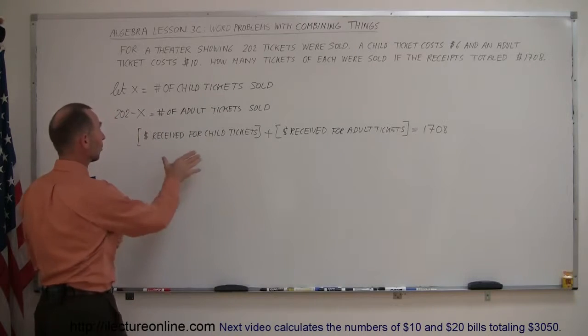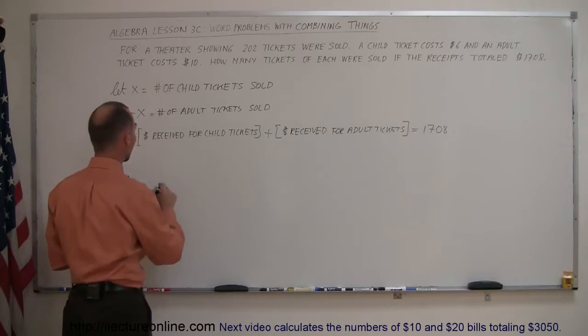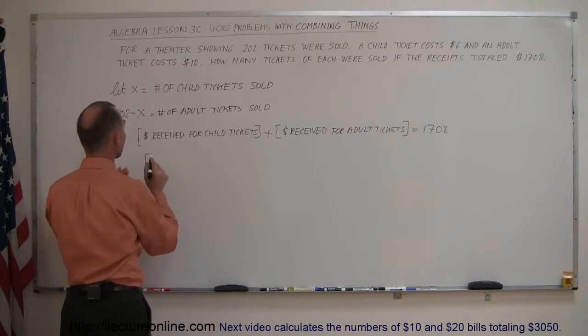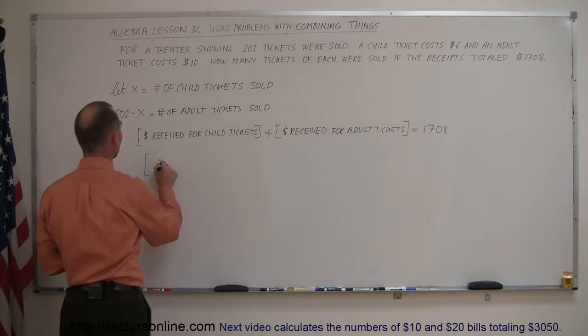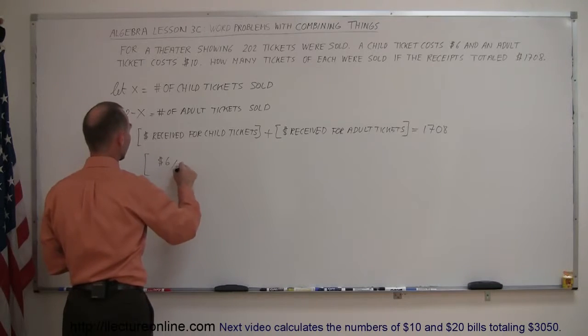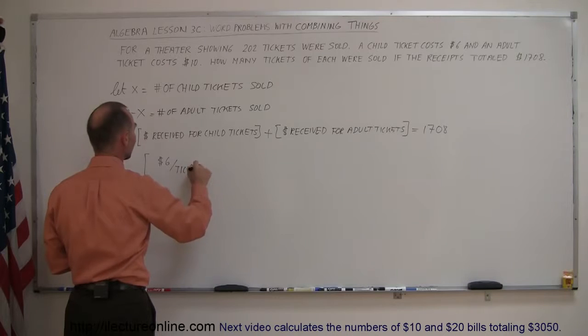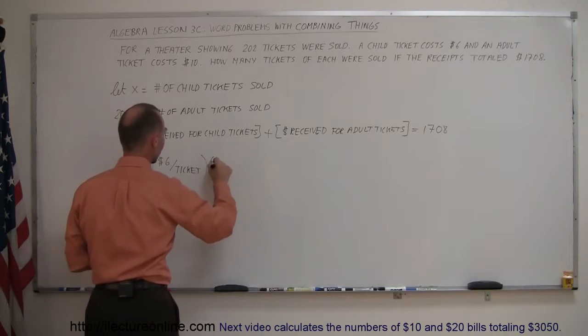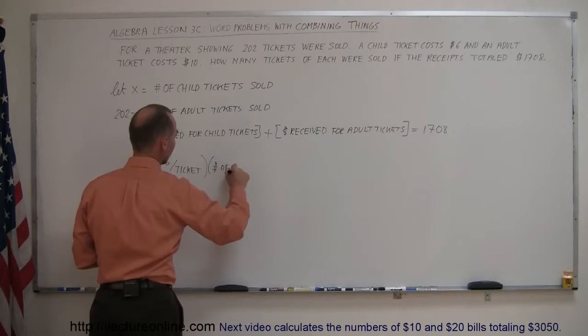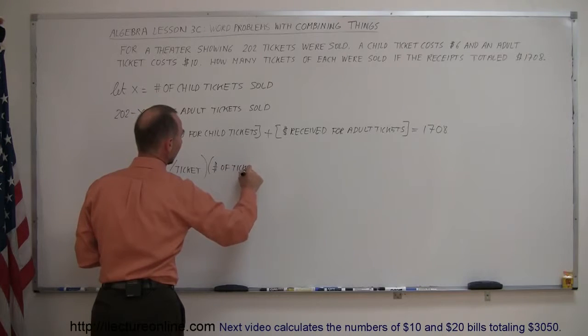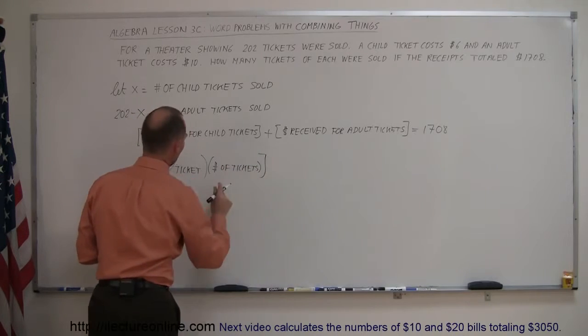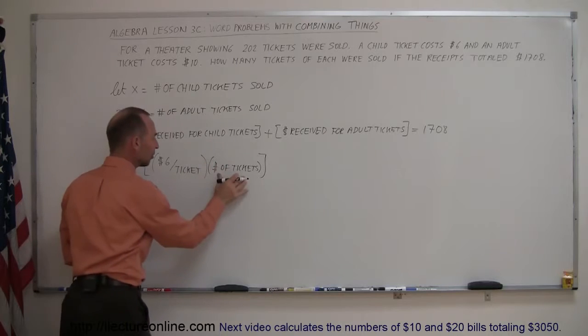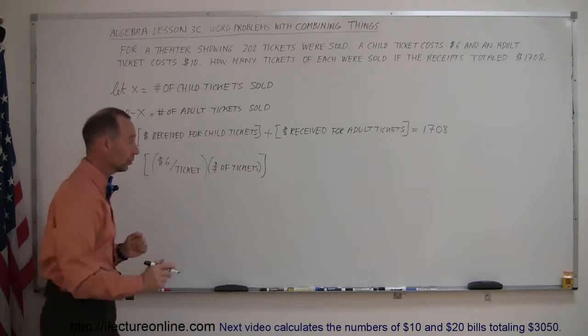Now, how do you algebraically express the number of dollars received for the child tickets? Well, you can go ahead and take the cost per ticket, which is $6 per ticket, and you multiply that times the number of tickets. So, the cost per ticket times the number of tickets gives you the total cost for all of those tickets.